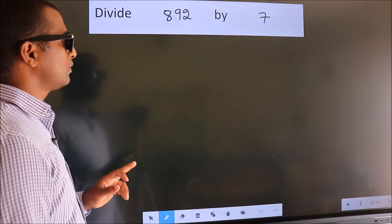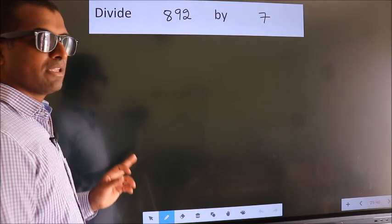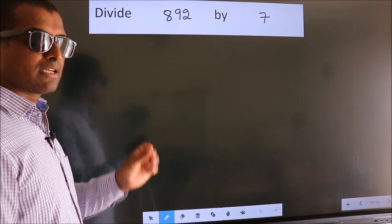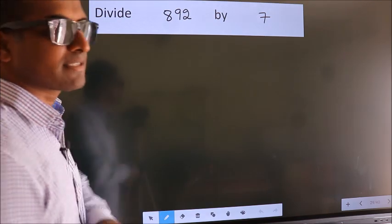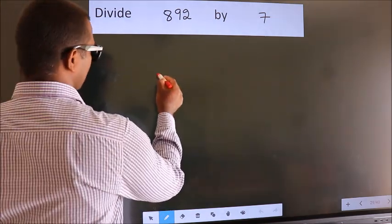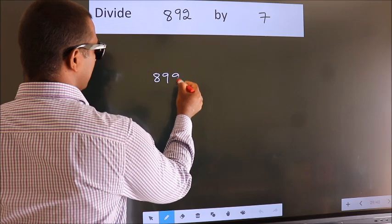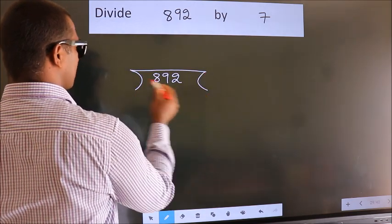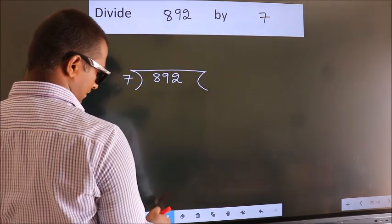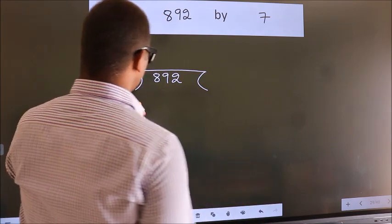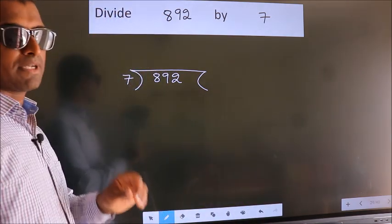Divide 892 by 7. To do this division, we should frame it in this way. 892 here, 7 here. This is your step 1.